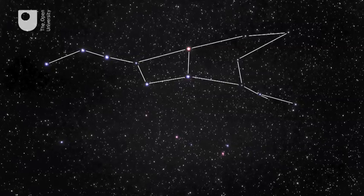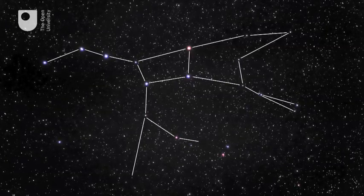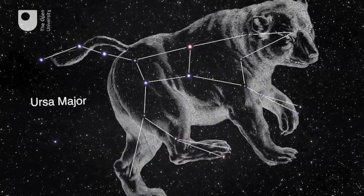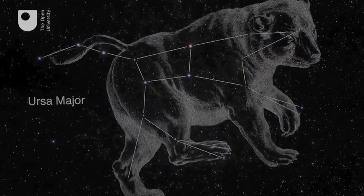Since stars travel on their own orbits through their galaxy, constellations change slowly and can even disappear. This takes tens of thousands of years.